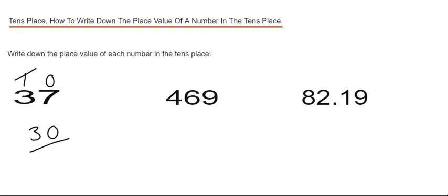We've got 469. Again, if we count two places from the end or the right-hand side of the number, we've got nine in our ones column, six in our tens place. This time we've got six tens, so six tens can be written down as 60.